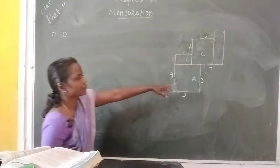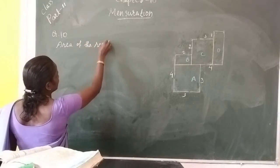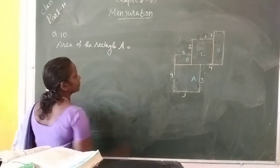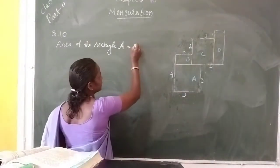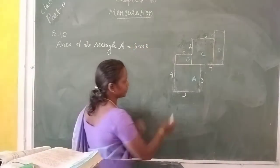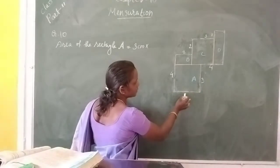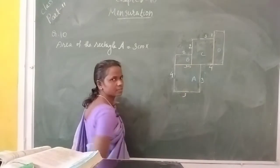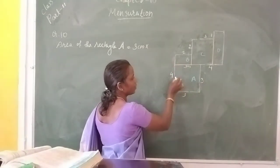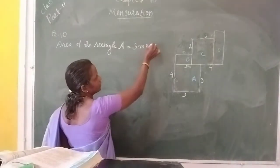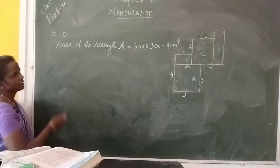First, find out the area of rectangle A. Area equals length multiplied by breadth. The length here is 3 centimeters. The breadth — this total distance is 4 centimeters, and this side is 3 centimeters, so its opposite side is also 3 centimeters. So, 3 centimeters into 3 centimeters equals 9 centimeters square. That is the area of rectangle A.